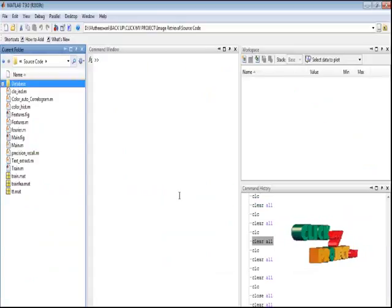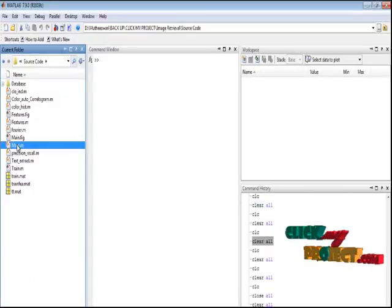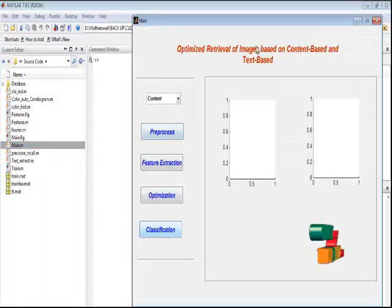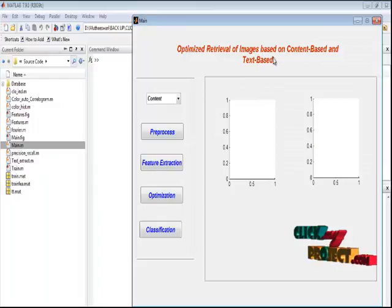Let us discuss the running process for our process. Select the main.m file in the current folder. Right-click the file and run to execute this process. This is the main window for the optimized retrieval image based on content-based and text-based.